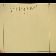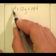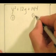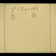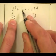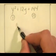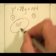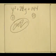Let's try another: y² plus 12y plus 144. Is y² a square? Yes. Is 144 a square? Yes, root is 12. Is the middle term twice the product of the roots? It should be 24y, but we have 12y — so this is NOT a perfect square trinomial. If the middle term were 24y, then it would factor as (y+12)². Trick question.